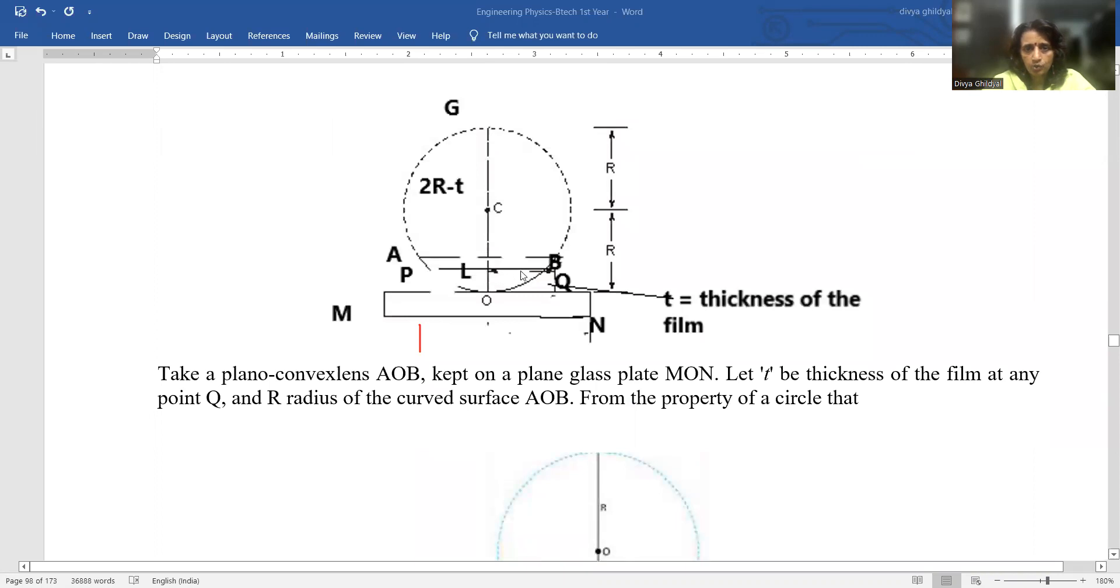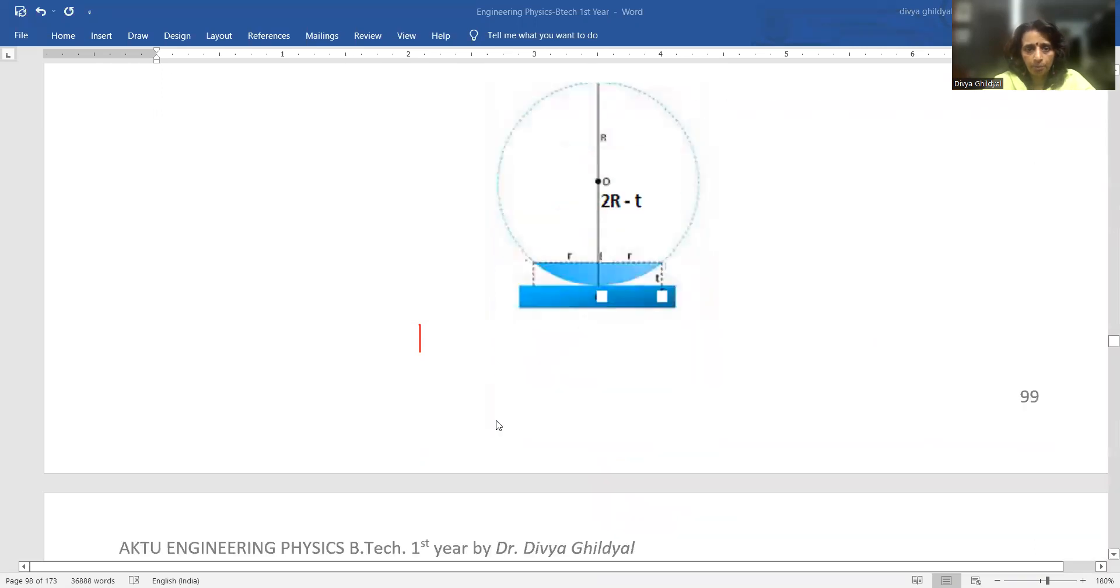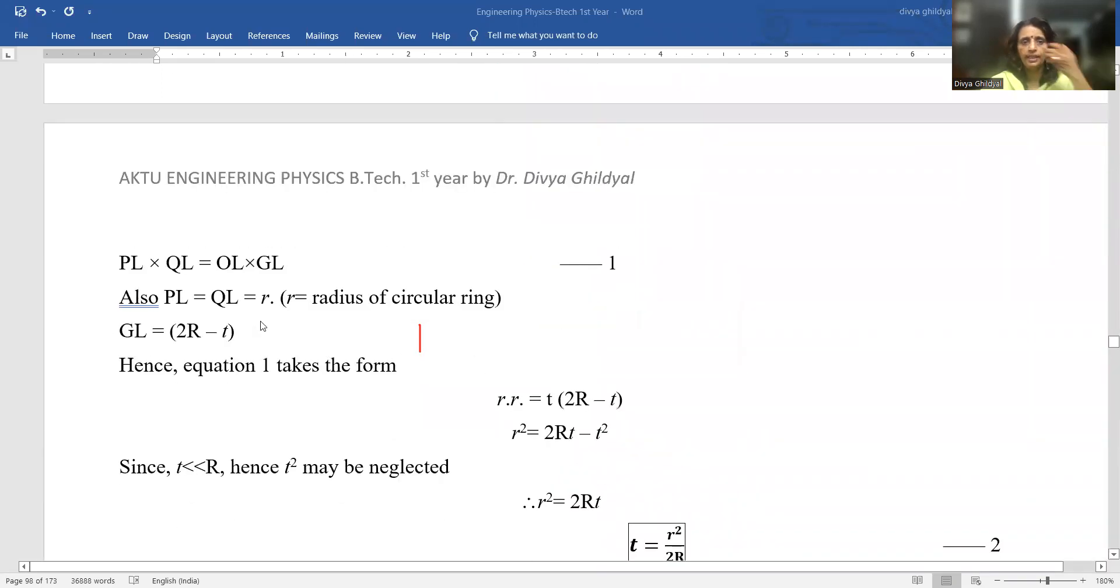We will put these values here. PL into QL is equal to R, radius of the circular ring. GL is 2R minus T, I just showed you right now.